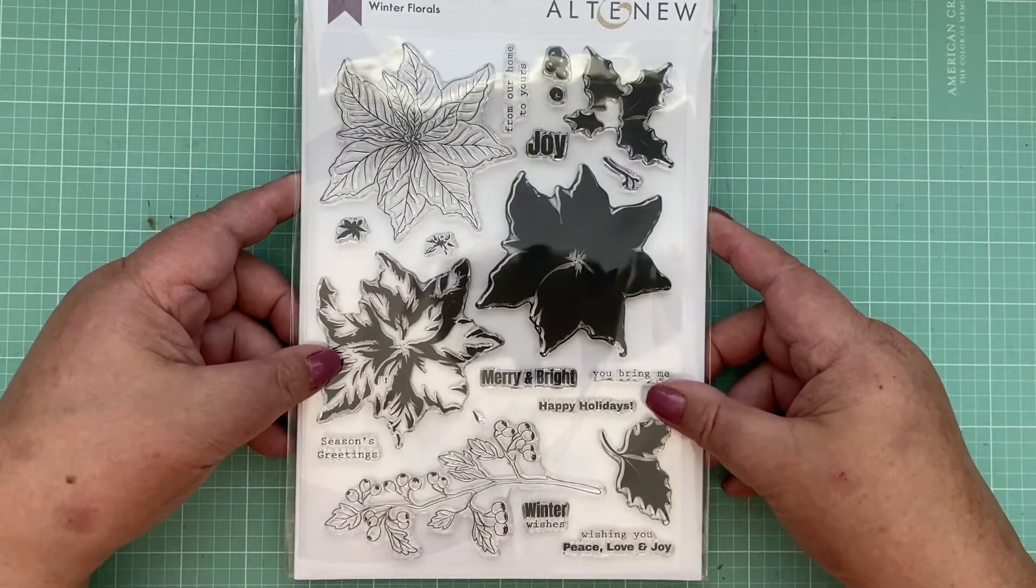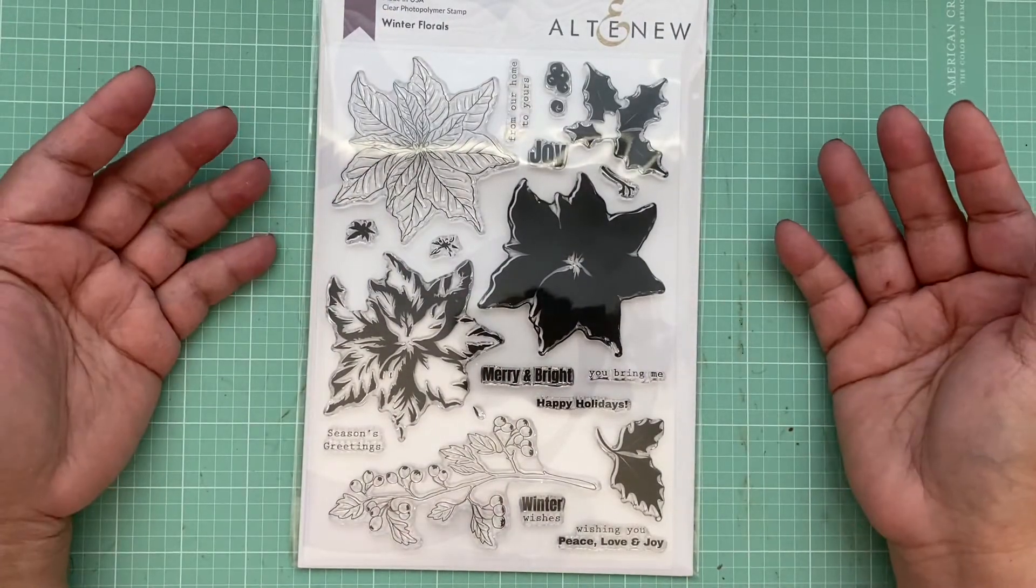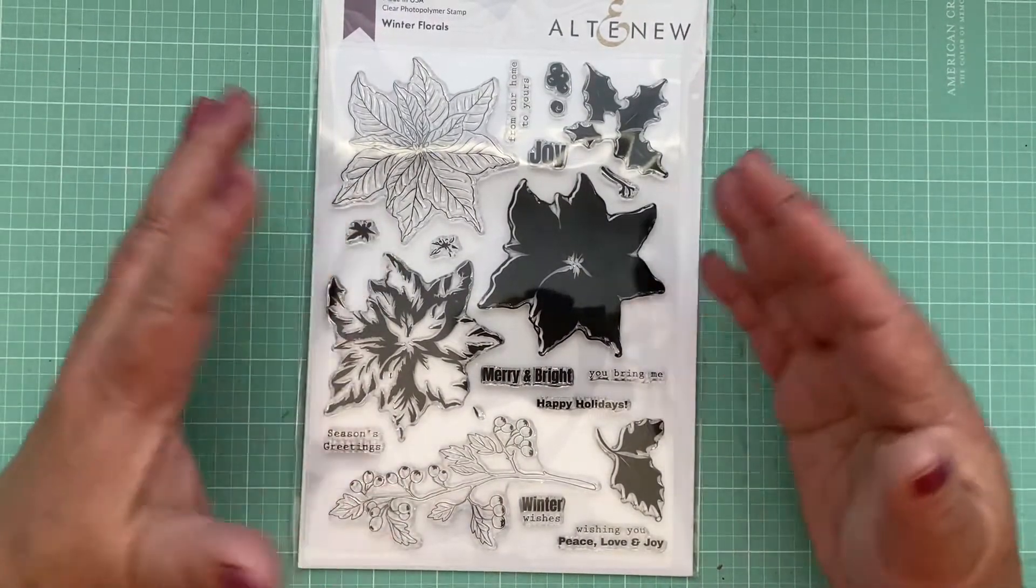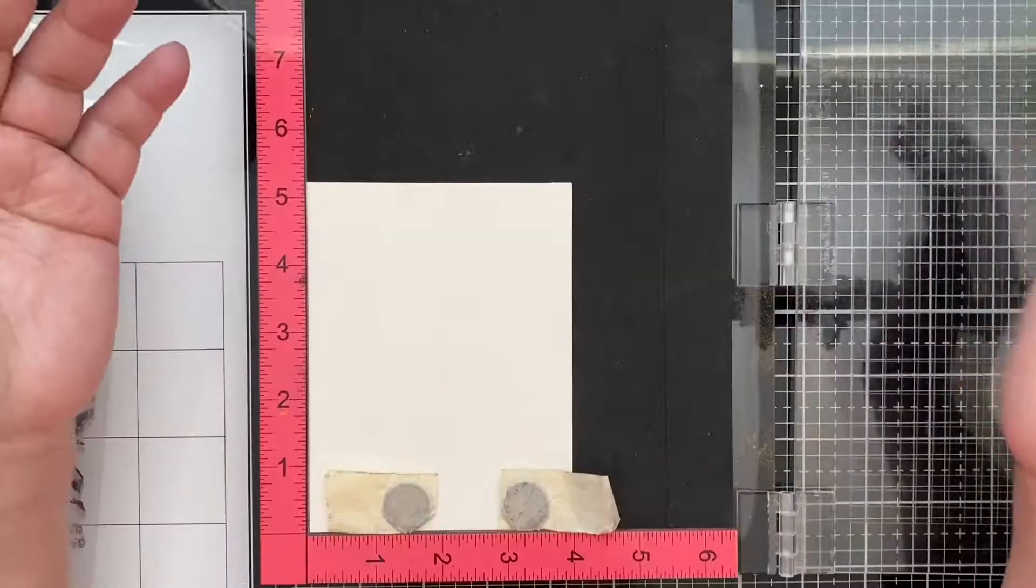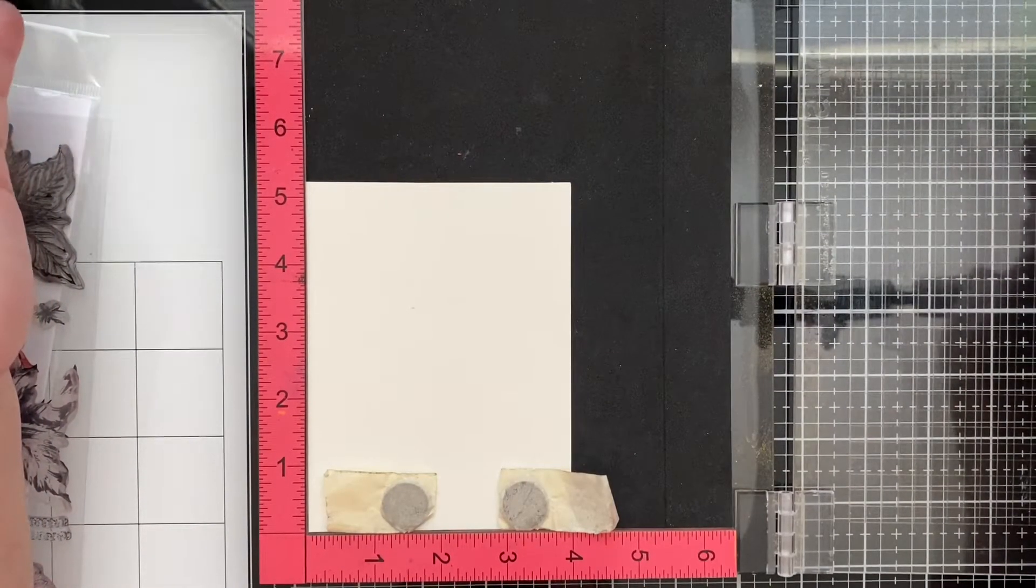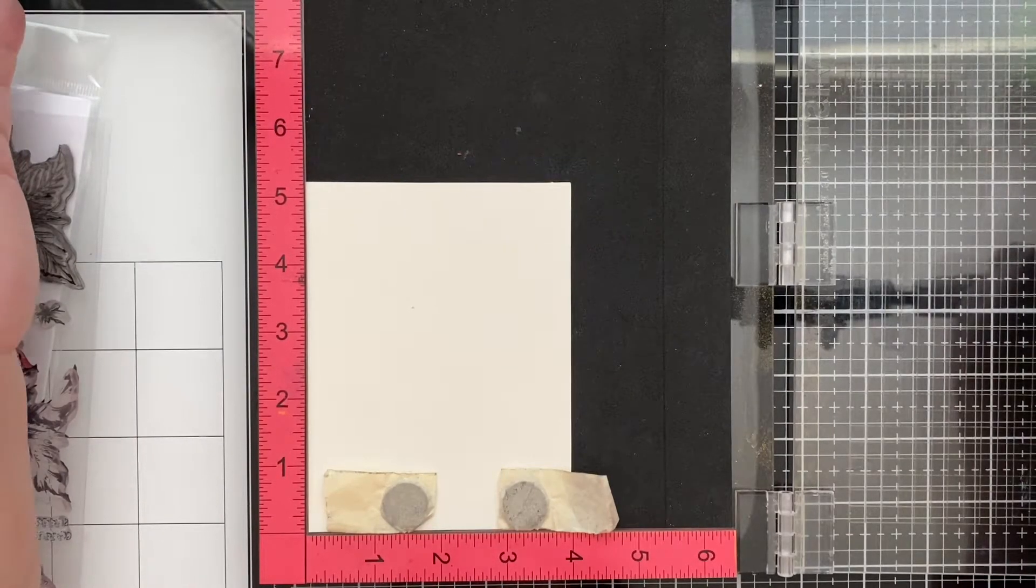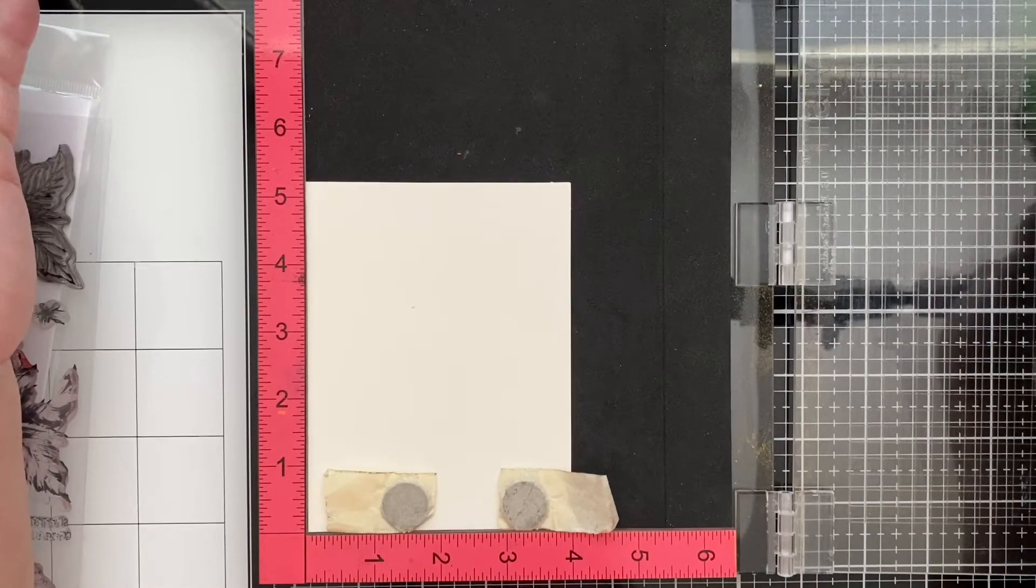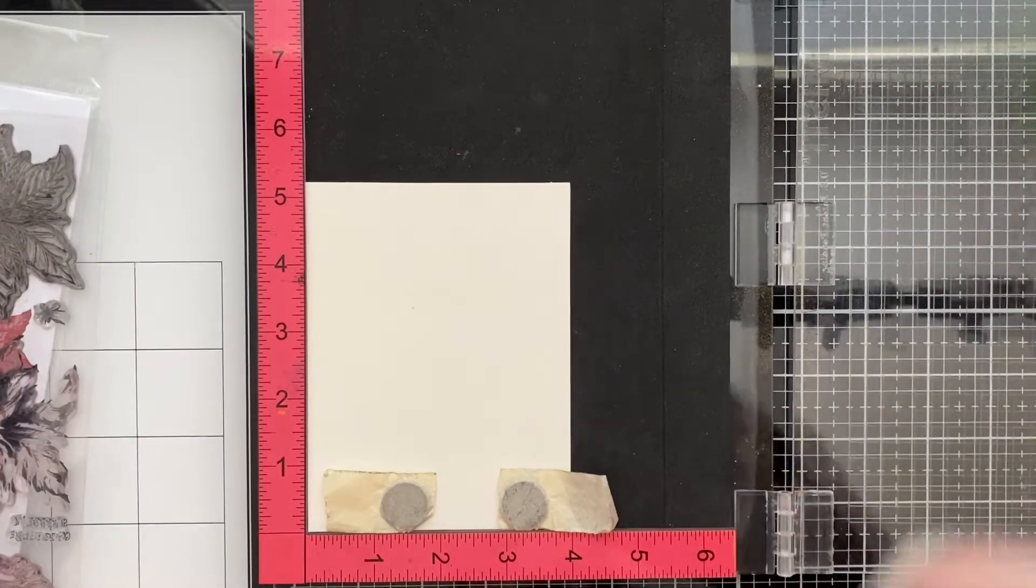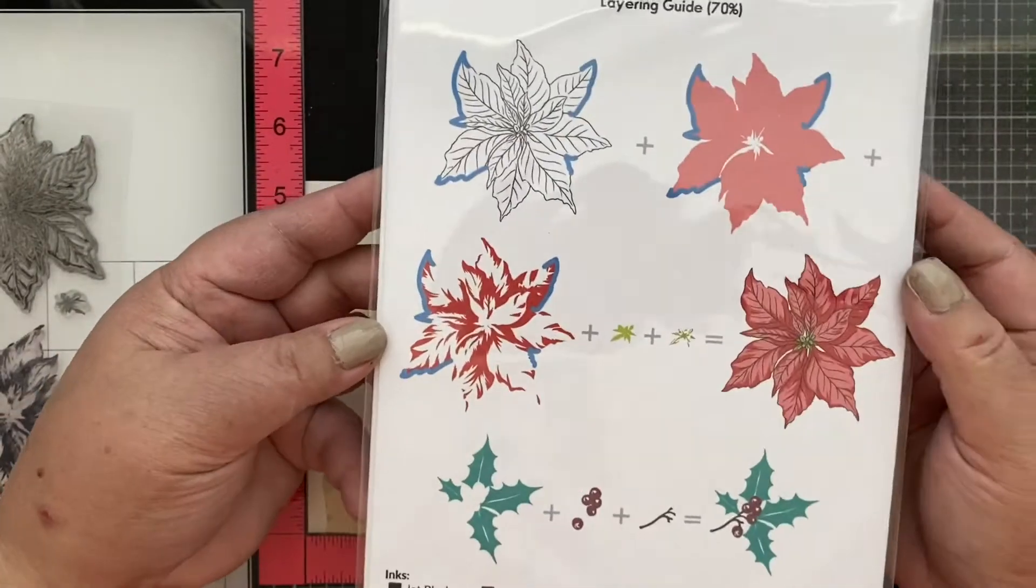We are going to use a technique, it's an older technique, basically it's a resist and masking. The portion of the video where I had shown the stamping and the actual process of creating this poinsettia had been corrupted, so I'm going to redo it. I'm going to re-stamp. Let me show you the layering guide.